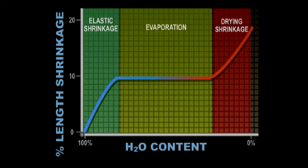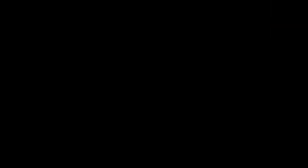Shrinkage of cotton goods is progressive, in that it may take several cycles of wetting and drying to achieve fully relaxed dimensions, although one cycle may remove as much as 90% of the total shrinkage.